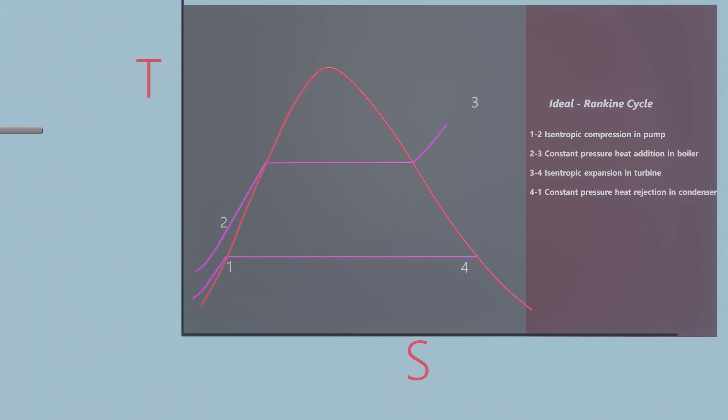First let's talk about the constant pressure curves. These two curves are the constant pressure curves. The upper curve has higher pressure compared to the lower curve.